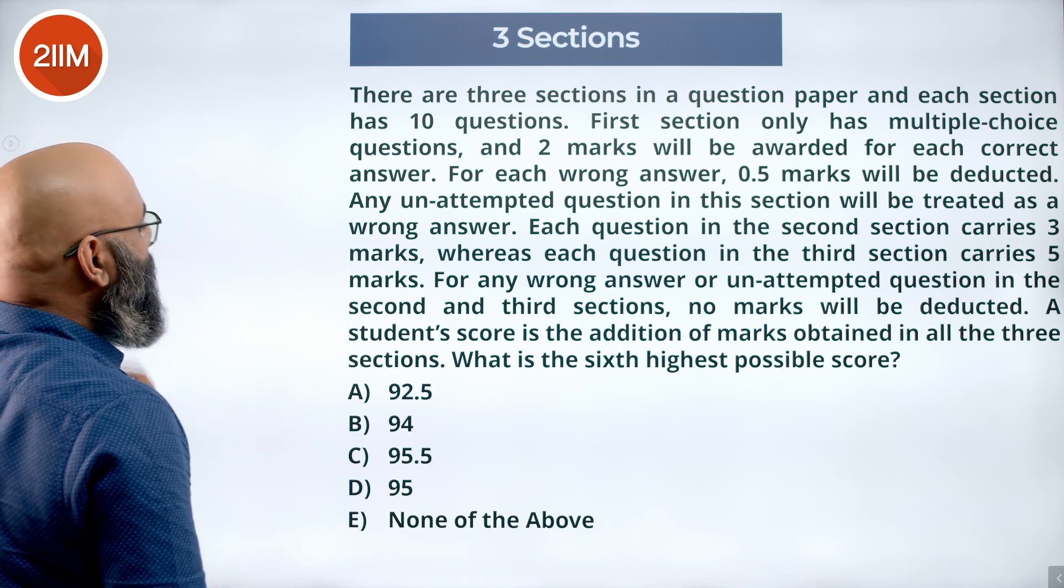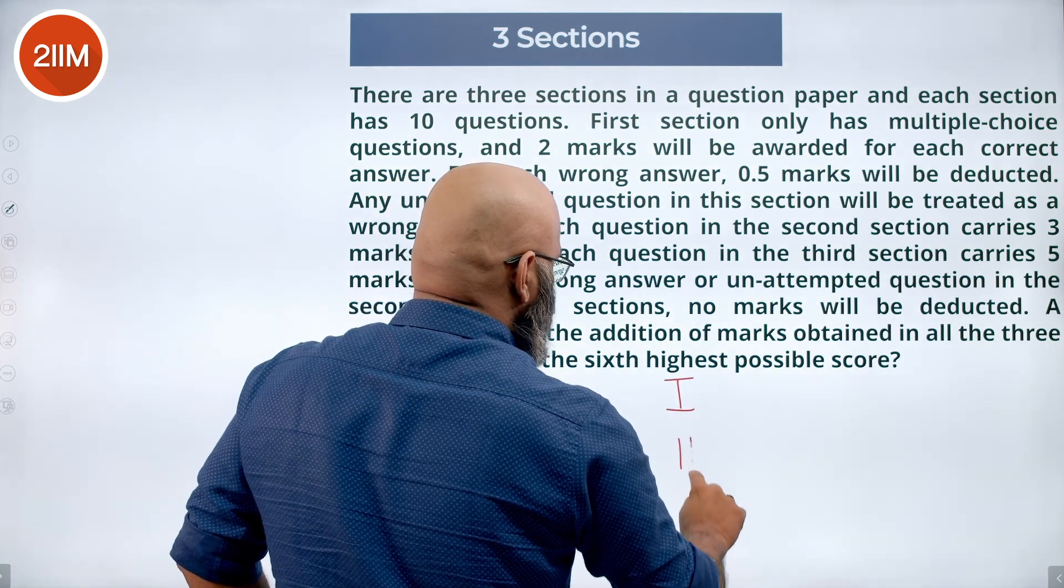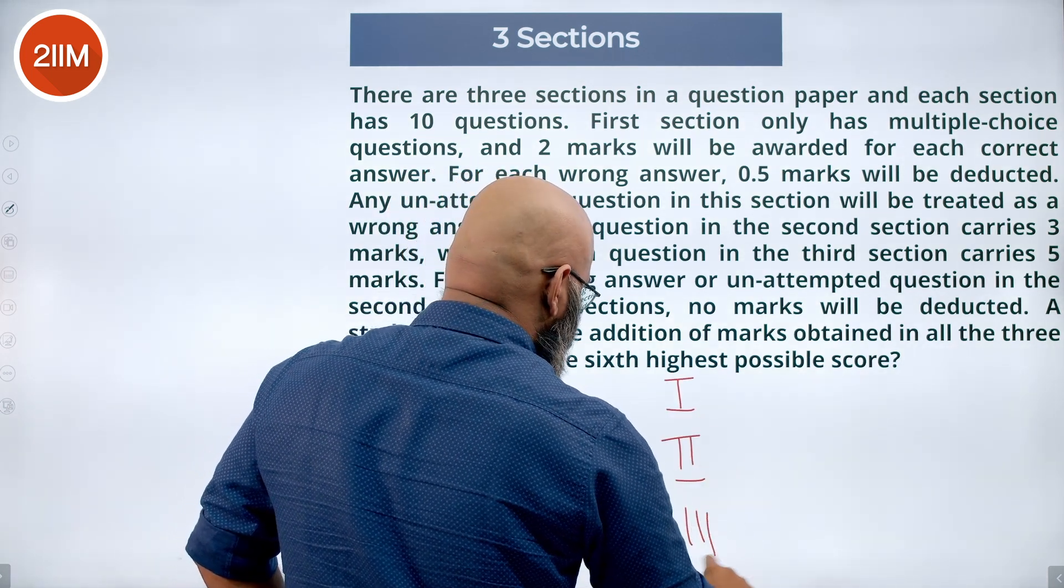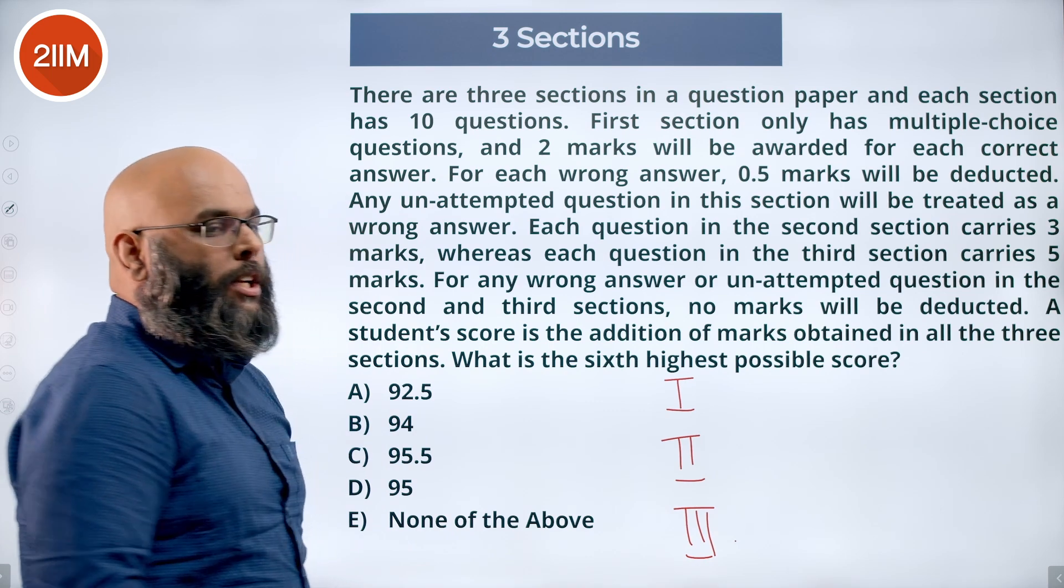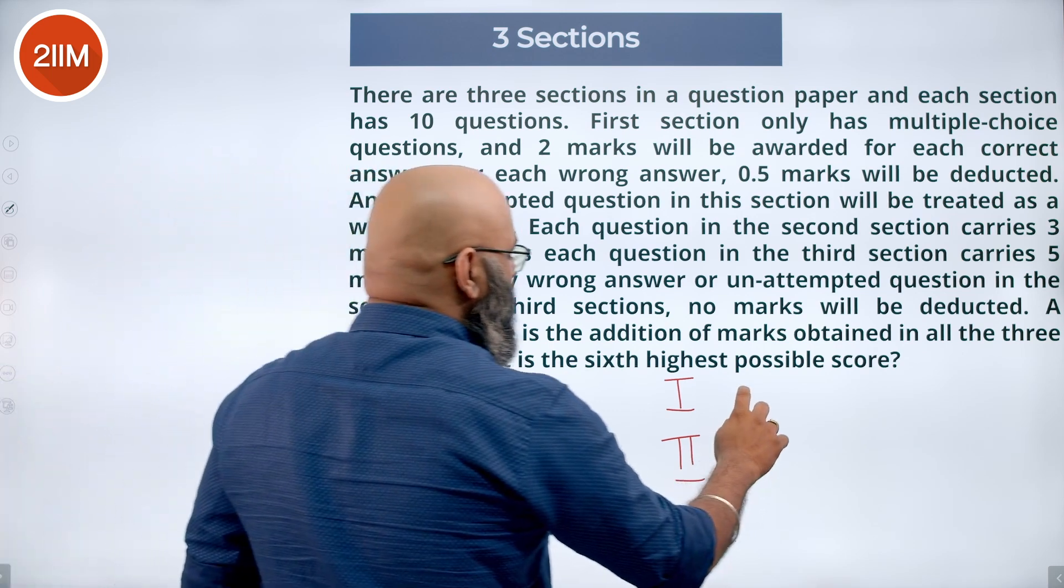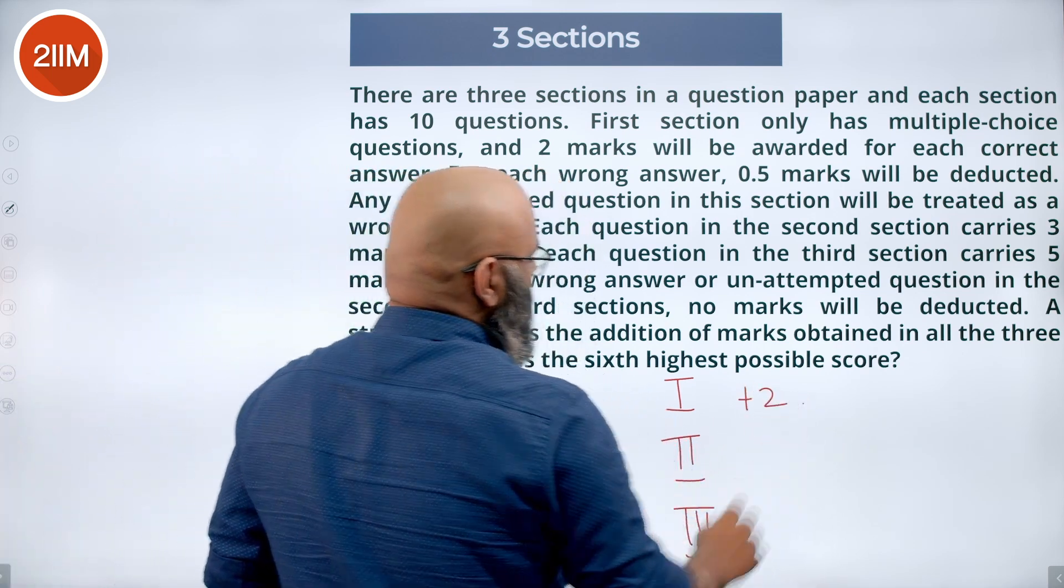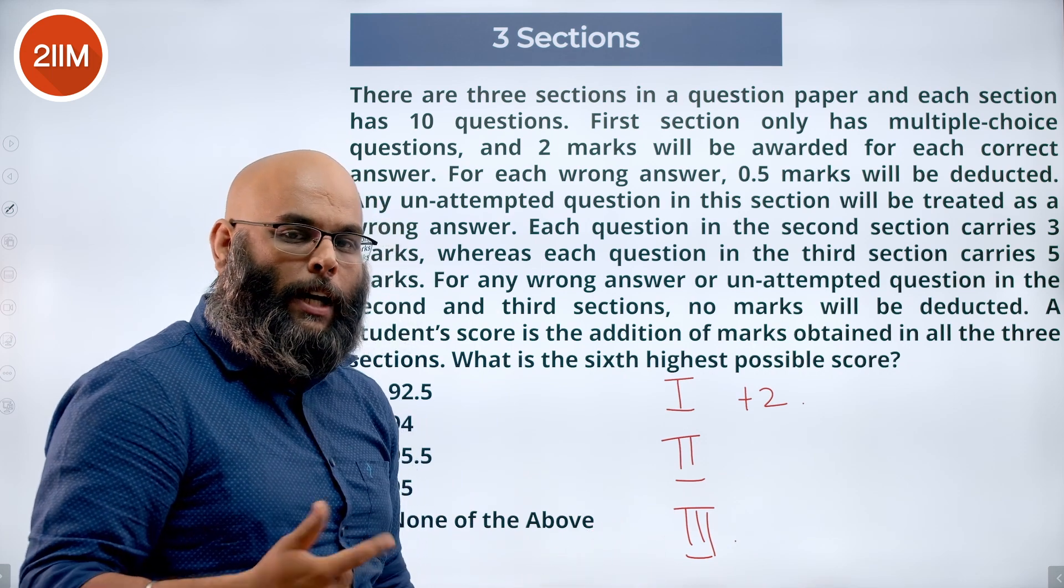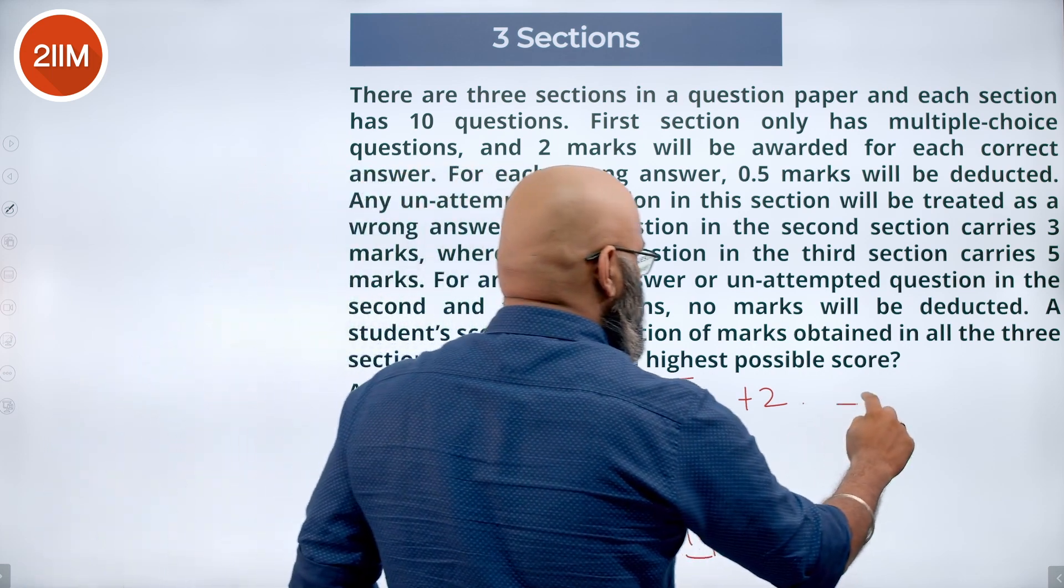Now we are given that there are three sections: section 1, section 2, section 3. Now in section 1, a right answer carries plus 2. A wrong answer or an unattempted question carries minus 0.5.